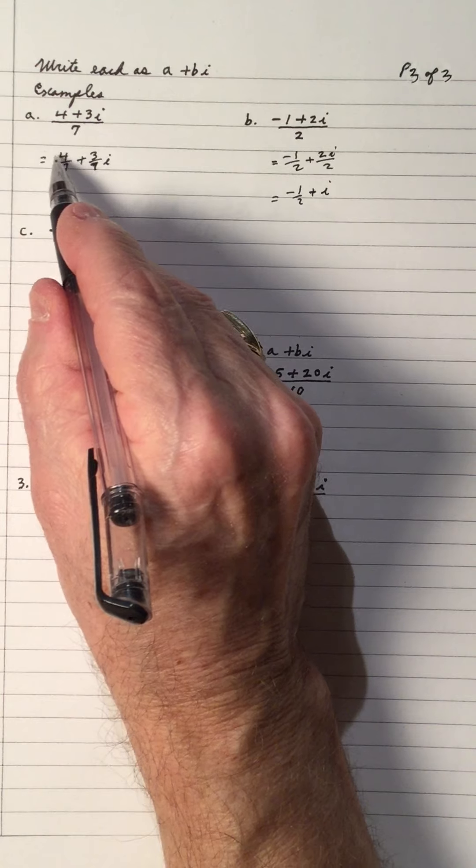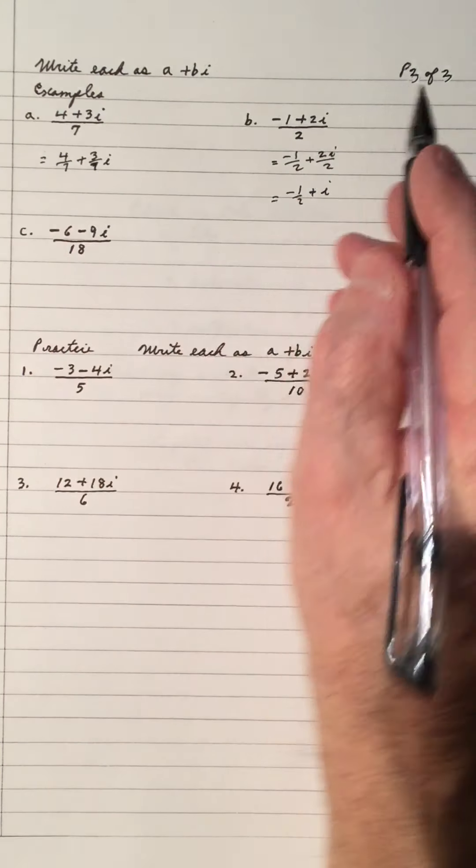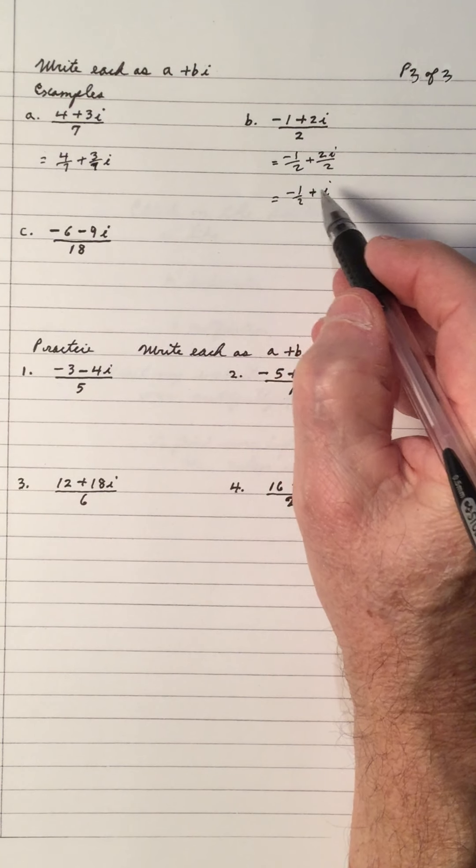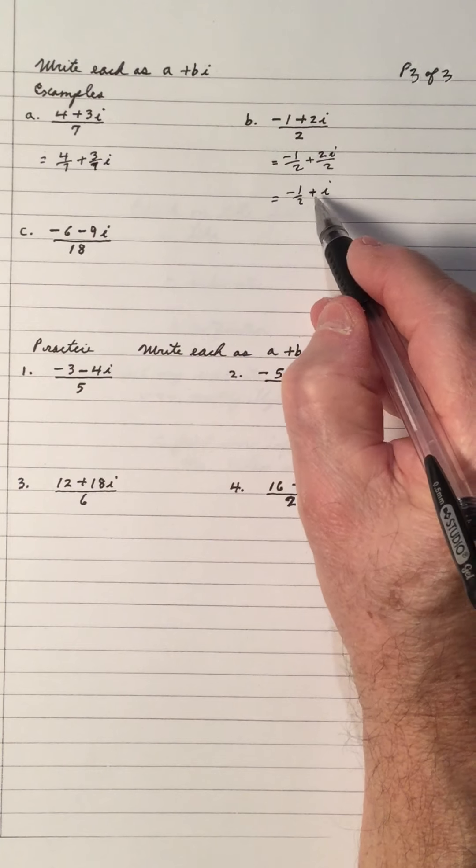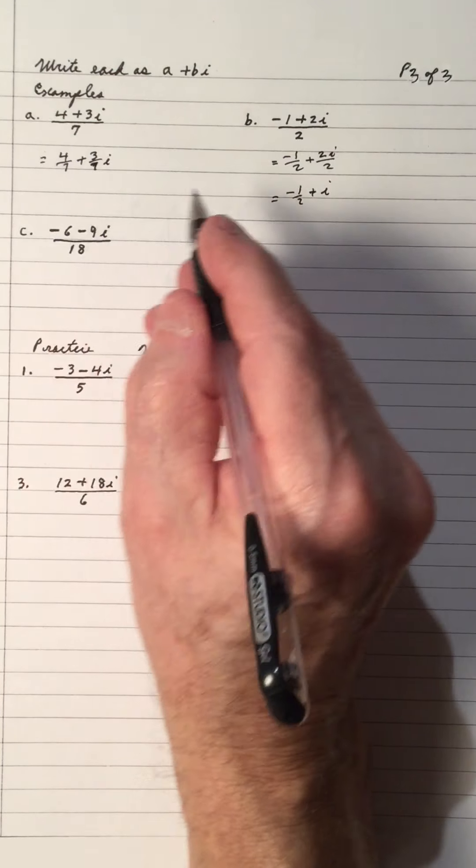Again, in this one, the real part is 2 sevenths. The imaginary part is 3 sevenths i. The real part, which is a, is negative 1 half. And the imaginary part is bi or 1i.